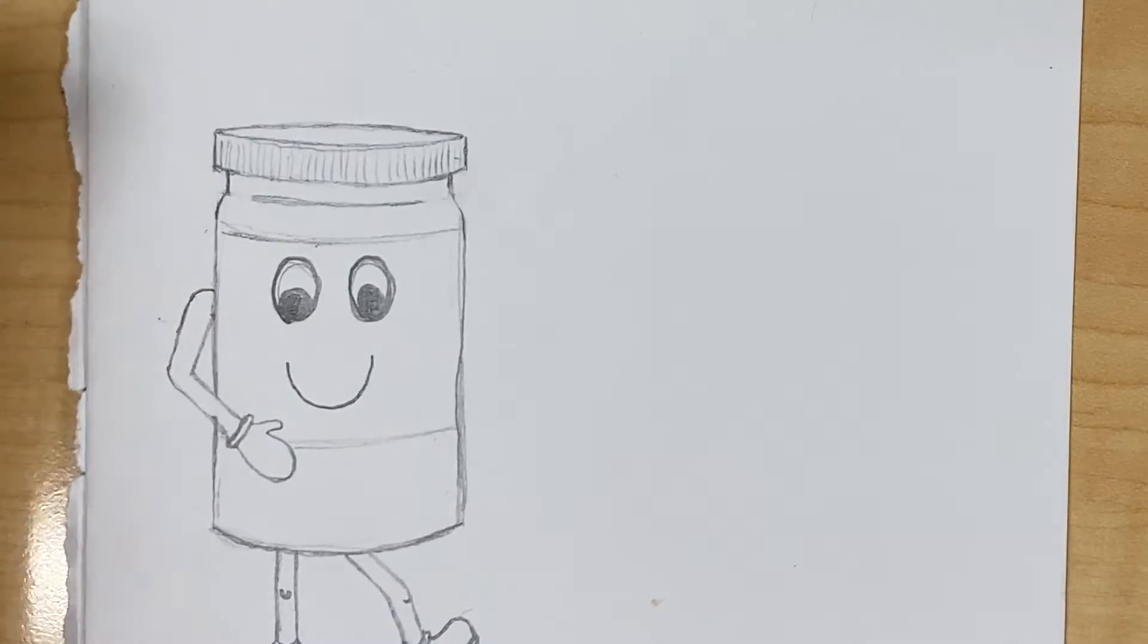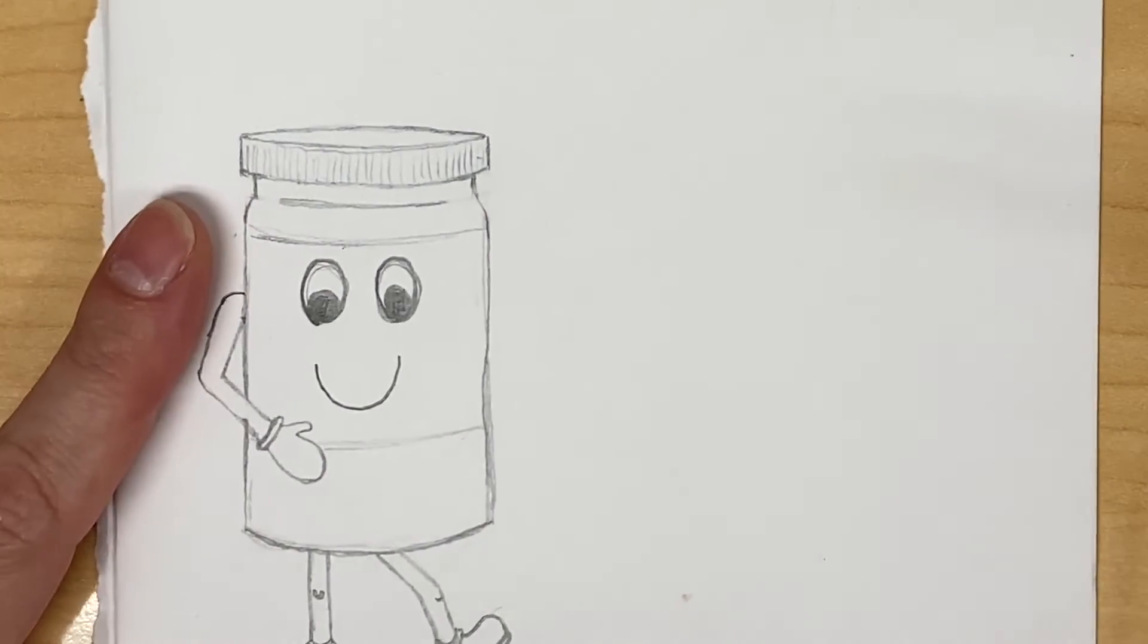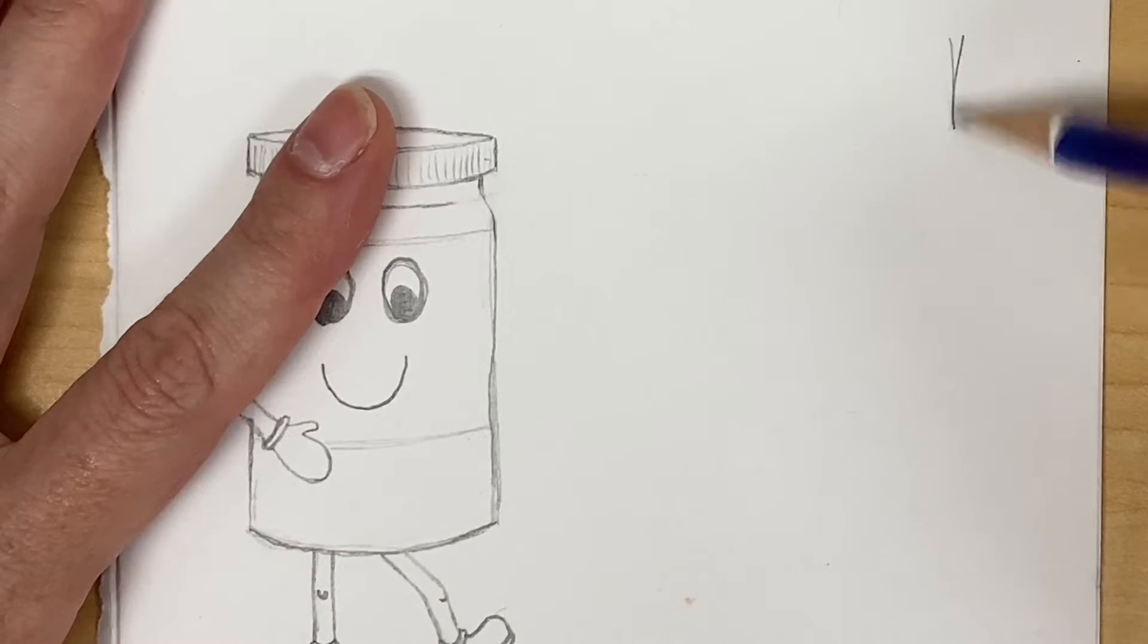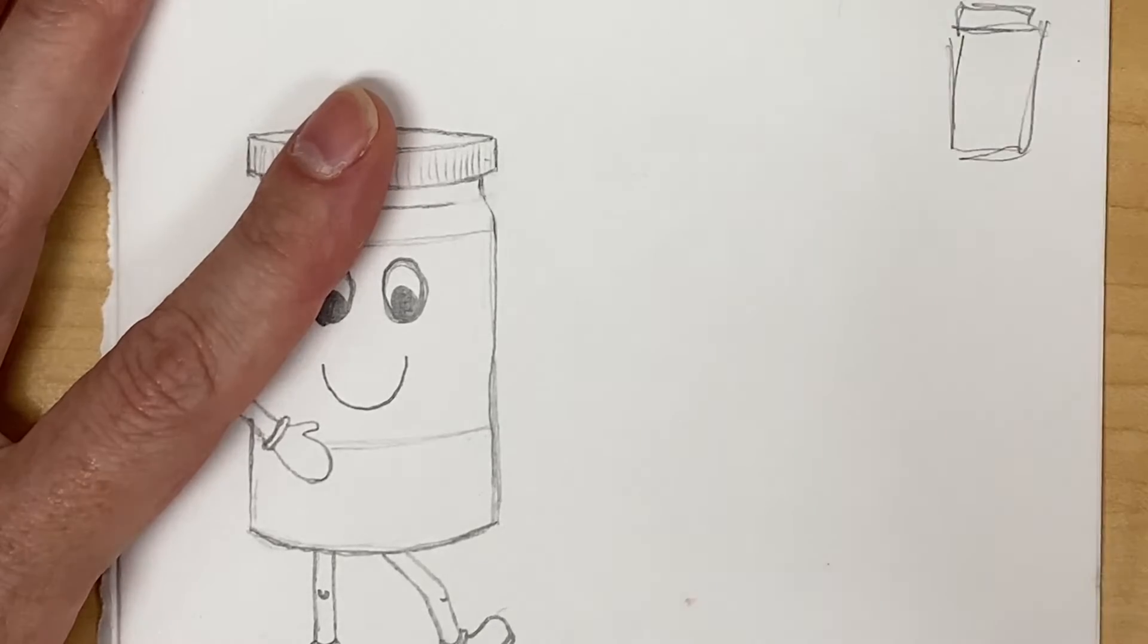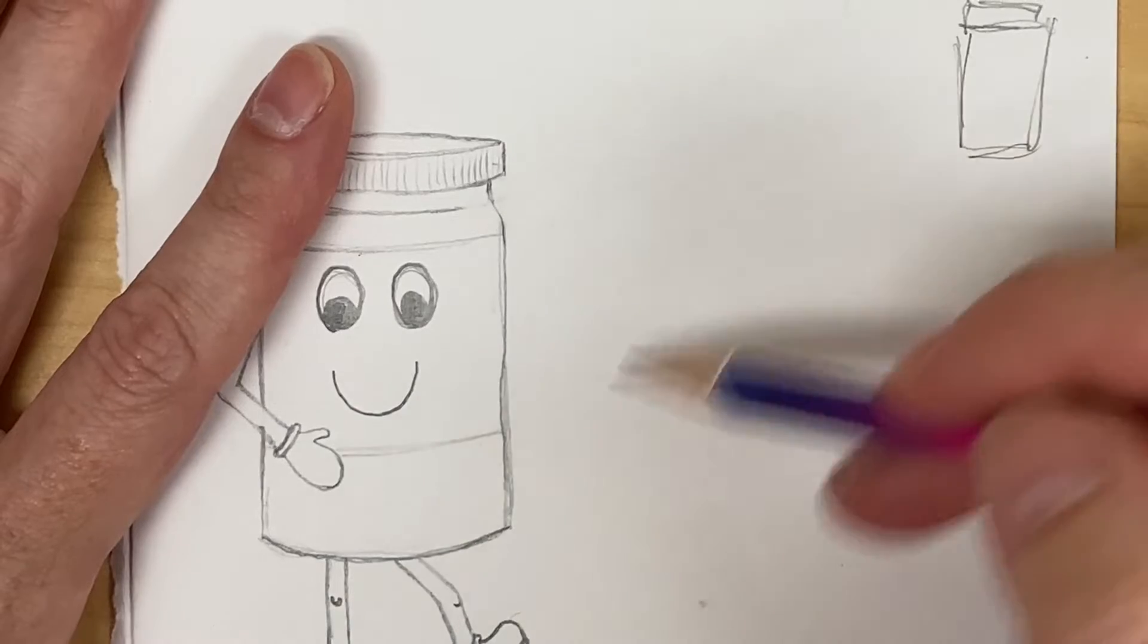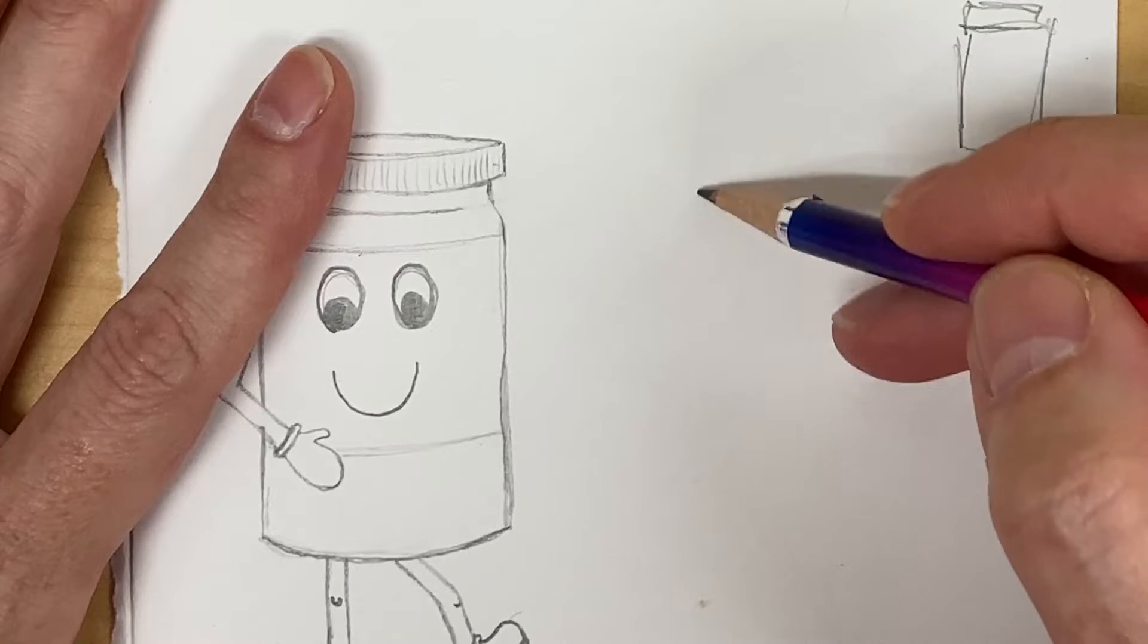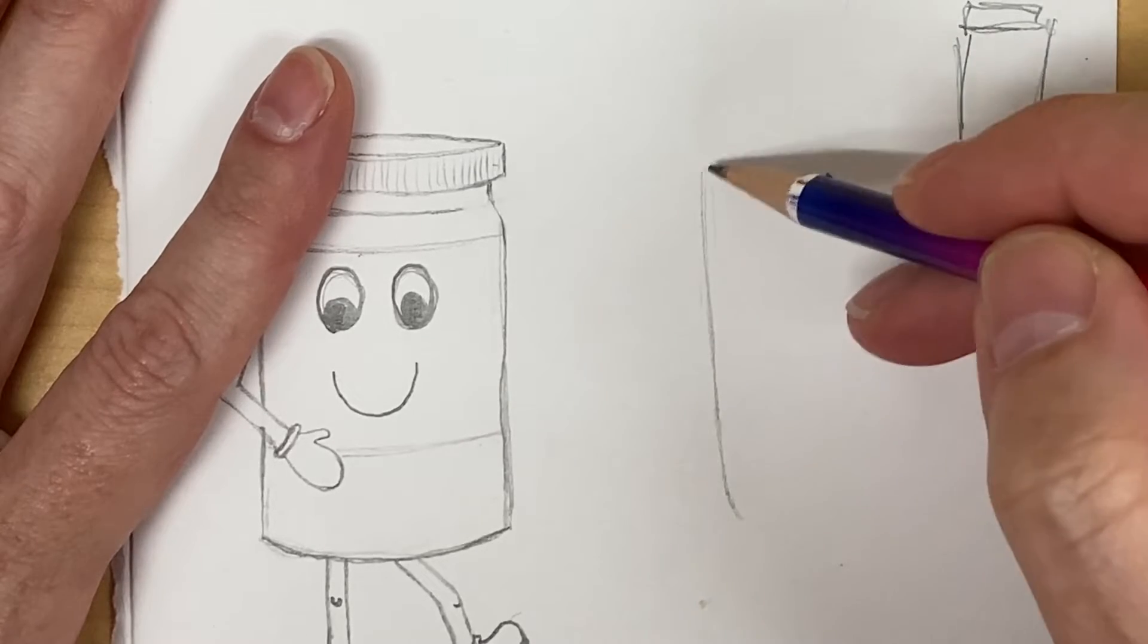Okay so when we start with our jelly guy we're gonna go on the right hand side over here and it's squeezable jelly, so it's not gonna be your traditional jelly jar like this. We're gonna flip it upside down. The way I start my jelly jar is kind of a light trapezoid, squeezable jelly.